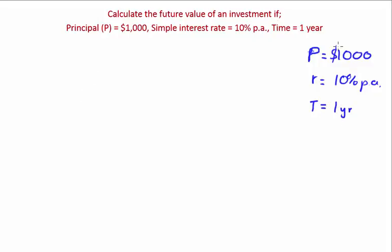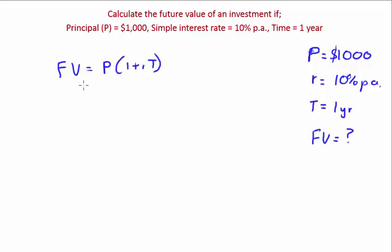The only missing variable is future value, so that's what they're asking for. Write out the formula: FV = P(1 + RT). We don't need to rearrange since future value is already isolated. Substituting in: FV = 1,000 × (1 + 10% × 1).